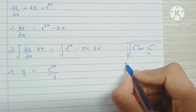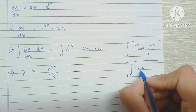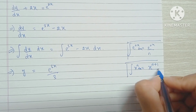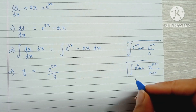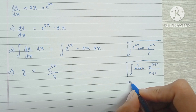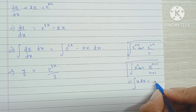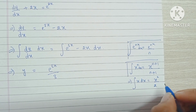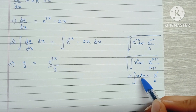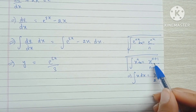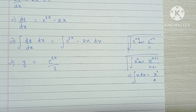We also know that the integral of x raised to n is equal to x raised to n plus 1 upon n plus 1. This means that the integral of x dx will be x squared by 2, because here n is 1, so it becomes x raised to 1 plus 1 upon 1 plus 1.